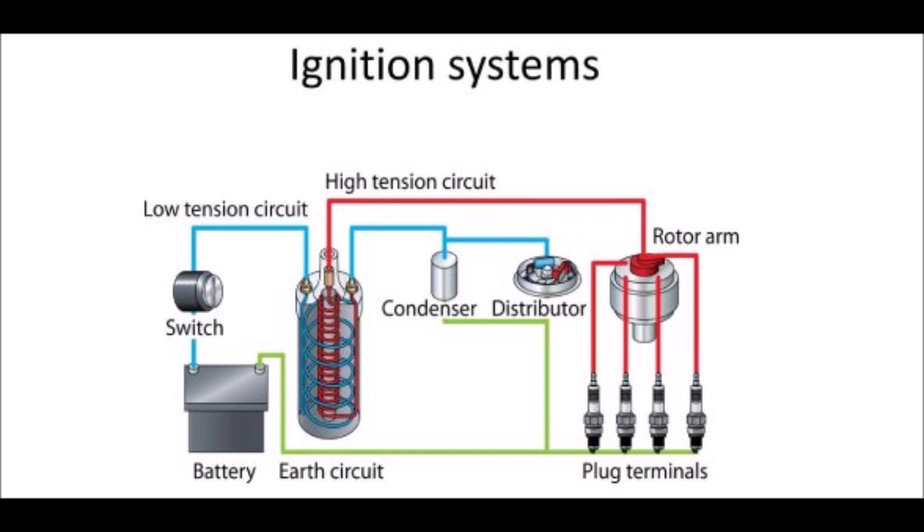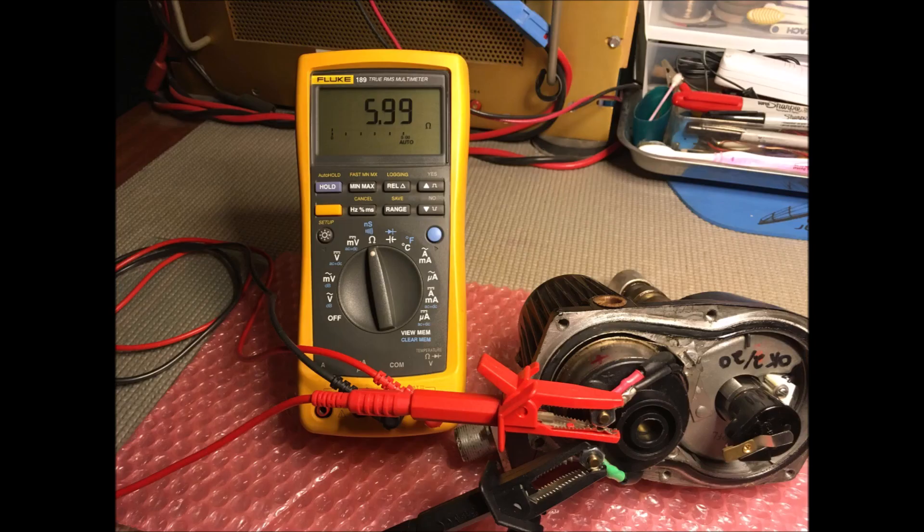The first coil we're going to be testing is a new old stock USGI government coil, the real deal. As we can see here, it's measuring 5.99 ohms, which is well within the 5 to 6 ohm specifications. We're measuring across the two terminals, the positive and negative terminals, which is the primary of the coil.